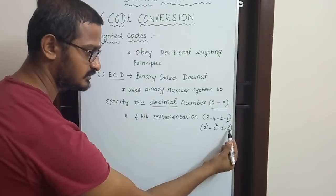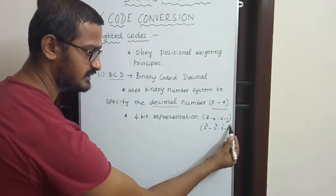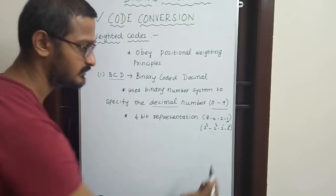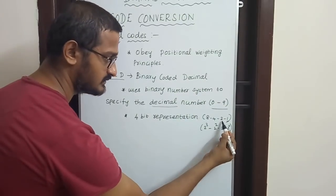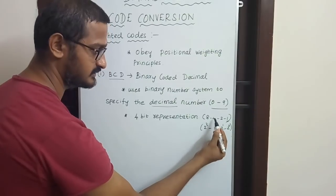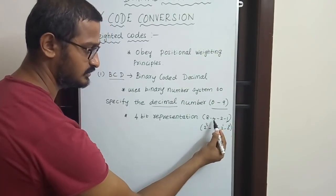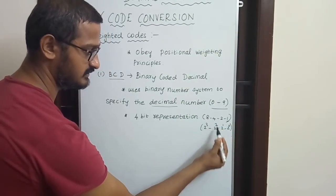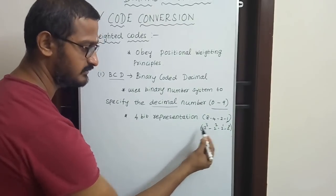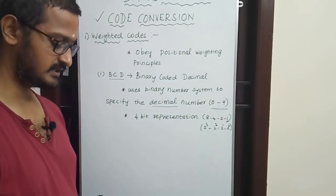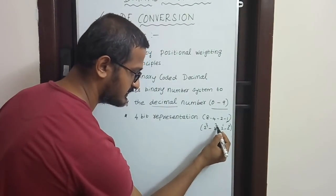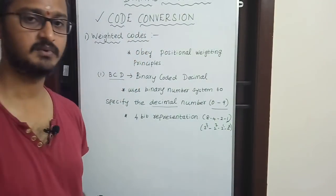In 8421 code, the bit positions have weights: 2 to the power of 0 is 1, 2 to the power of 1 is 2, 2 to the power of 2 is 4, and 2 to the power of 3 is 8. This gives the weightage 8, 4, 2, 1 for each bit position.